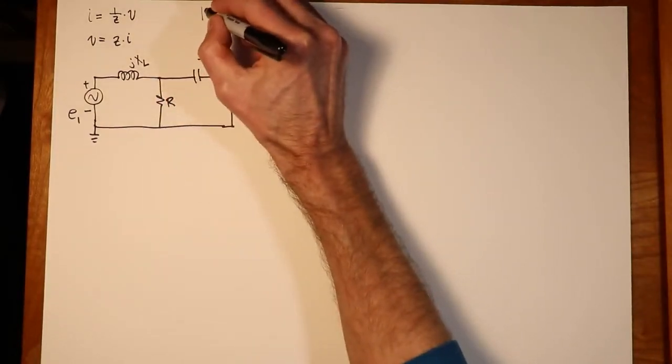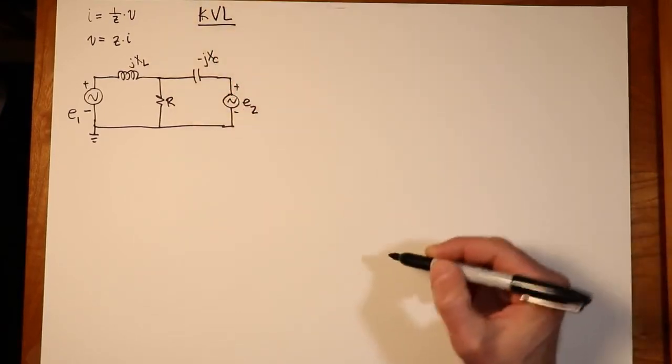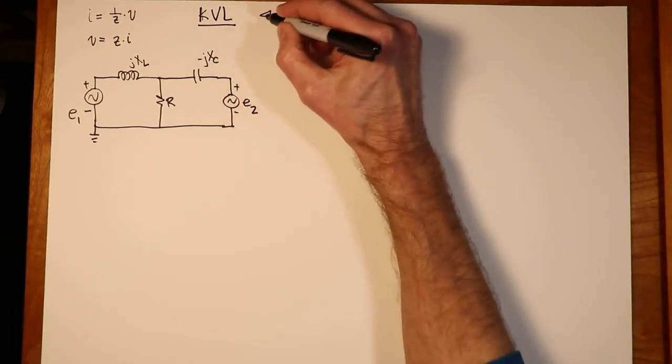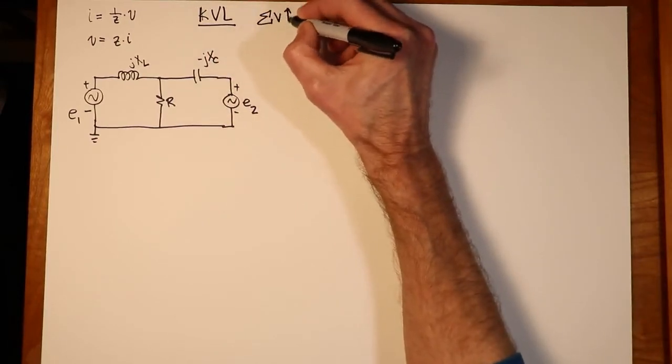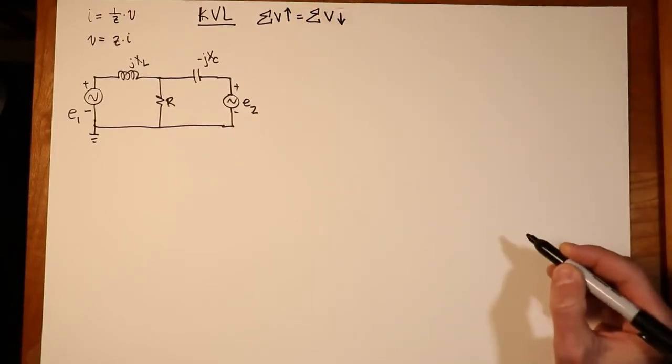So this relies on Kirchhoff's voltage law. Summation of voltages around a loop have to be zero, or we could think of that as the summation of voltage rises has to equal the summation of voltage drops.